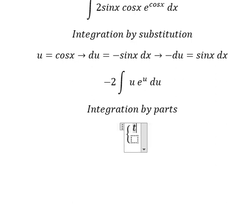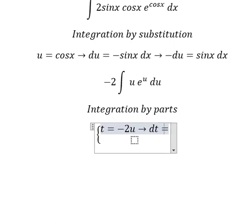We set t equals to negative 2u. Later that, we differentiate for both sides. And we have dt equals to negative 2 du.